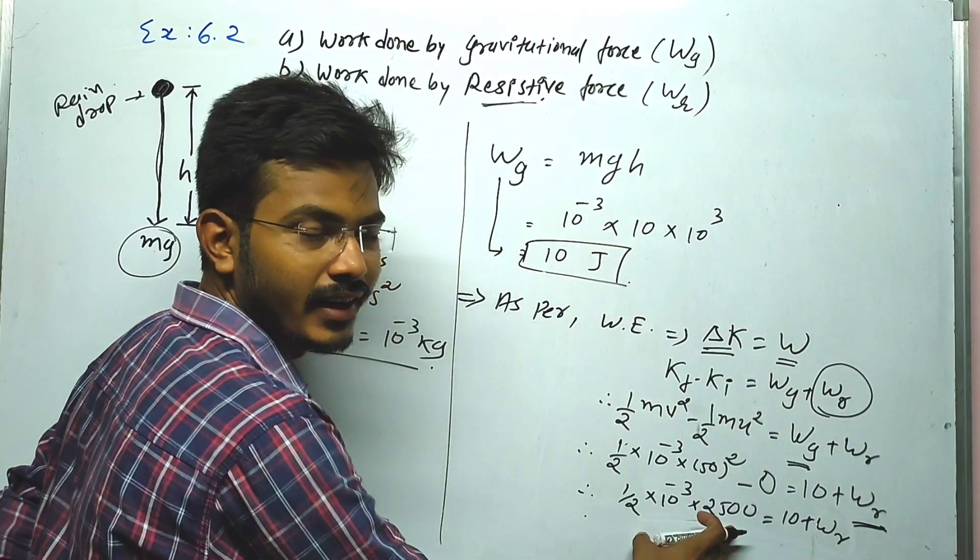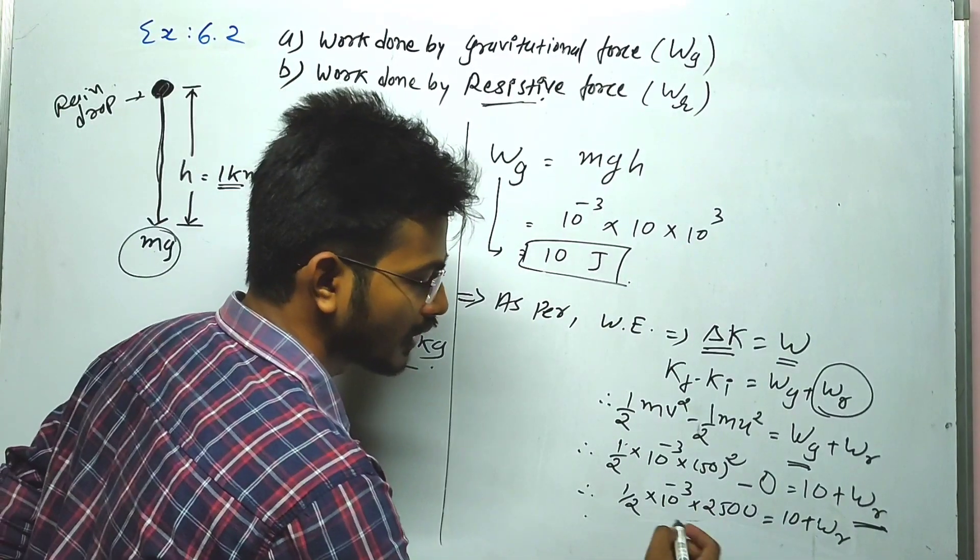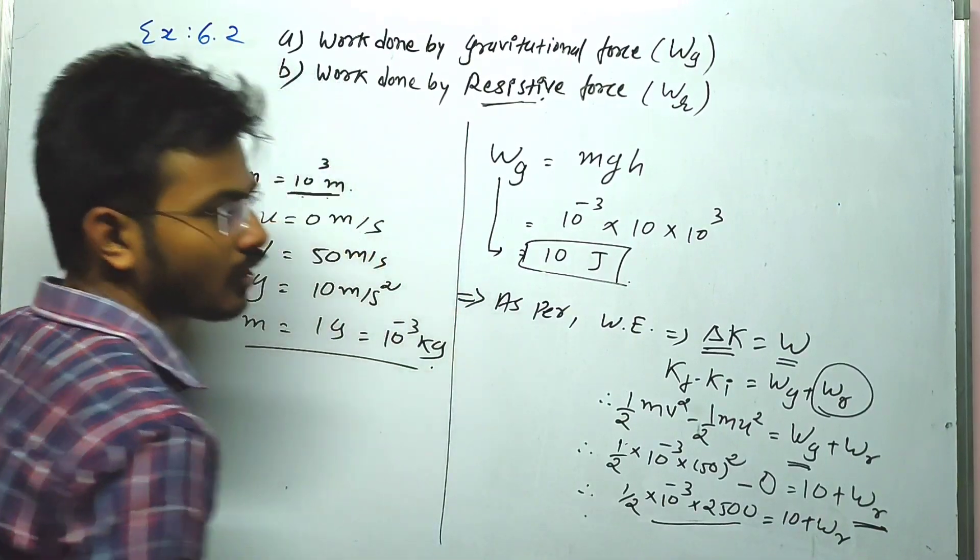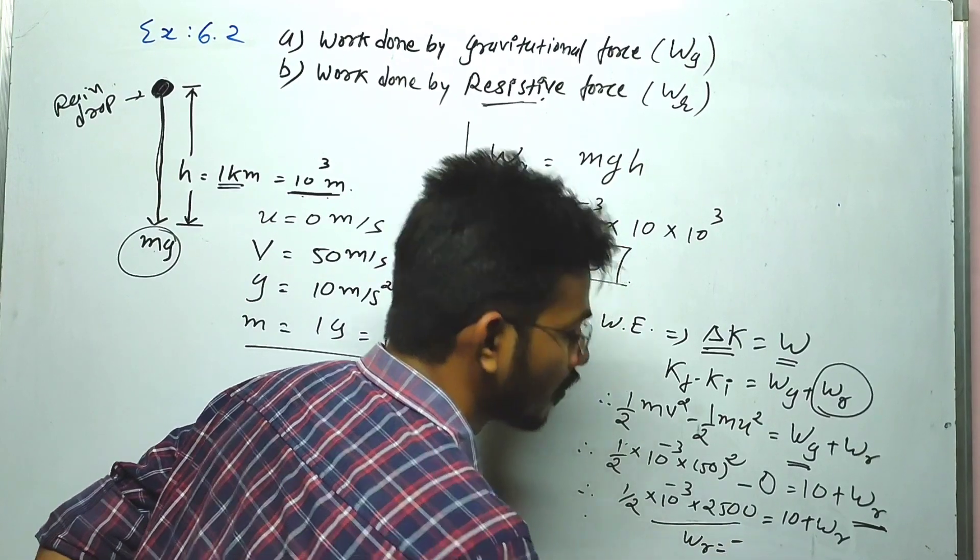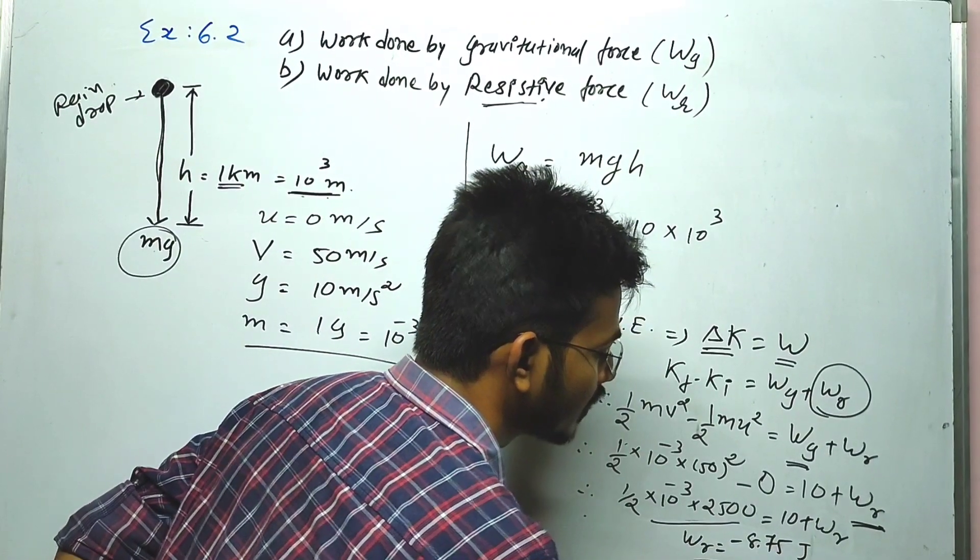Now the answer will be 1.25 minus 10. So the answer for WR is WR equals minus 8.75 joules.